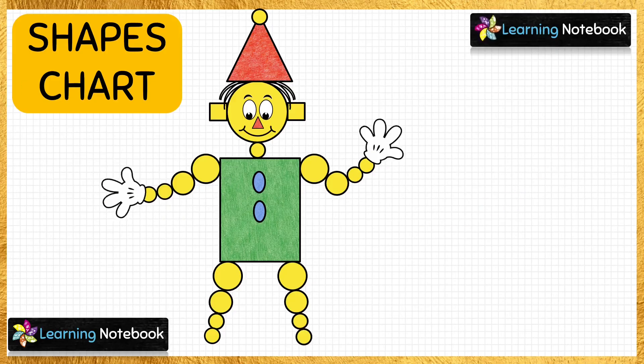Now draw two hand gloves of joker using black marker. Then students, use the remaining two ovals to form the shoes of the joker. So as you can see, our shape joker is complete now.